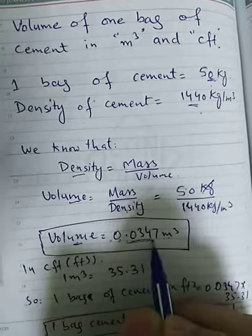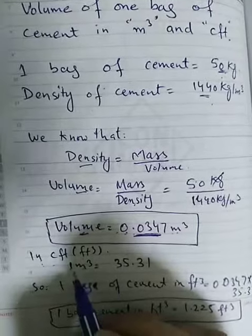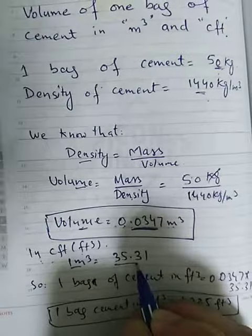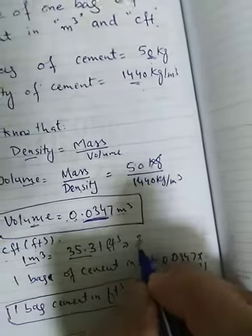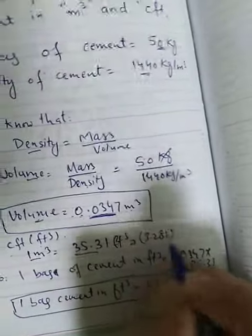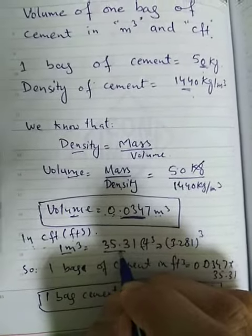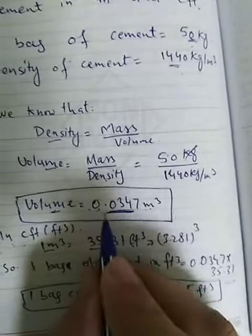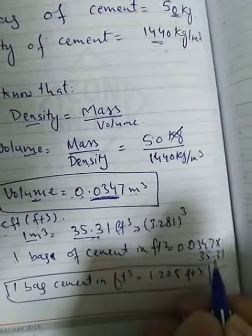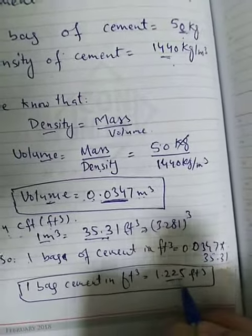One bag of cement of 50 kg has a volume of 0.0347 meter cube. Now to convert it into CFT, as one meter cube equals 35.31 feet cube — that is 3.281 to the power of 3 — so one bag of cement in feet cube equals 0.0347 multiplied by 35.31, which gives 1.225 CFT.